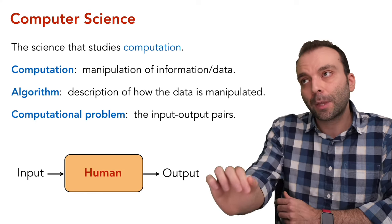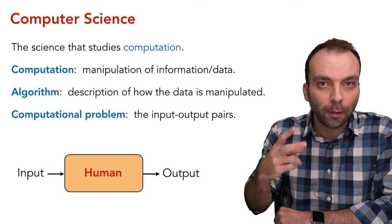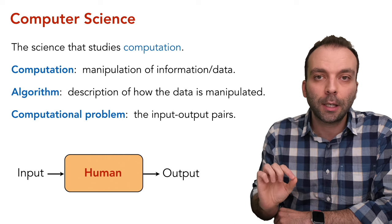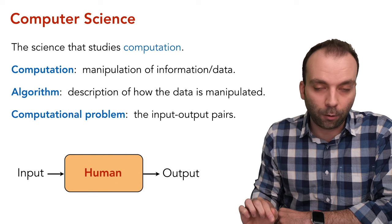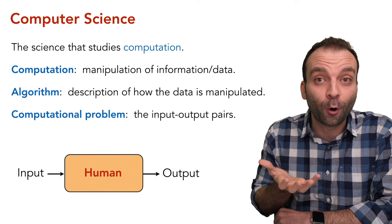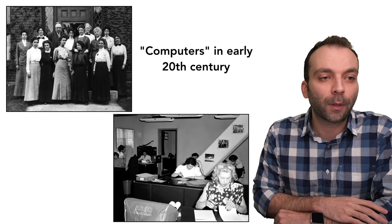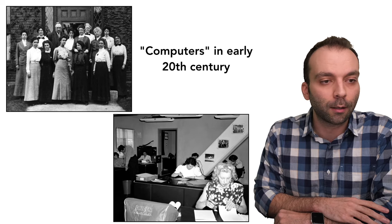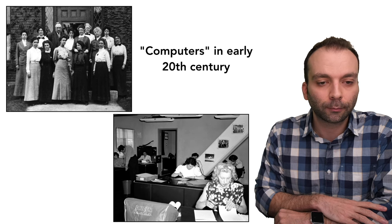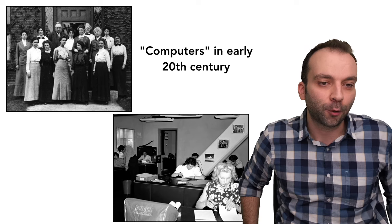In fact, if you look 'computer' up in the dictionary, you'll find two definitions — one describes electronic devices, and the other is a human being trained in doing calculation. Before electronic devices, a 'computer' referred to a person trained in calculation. Here are some computers from the early 20th century — Alan Turing's time. What do you notice about these pictures?